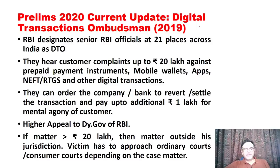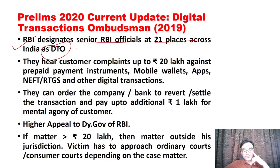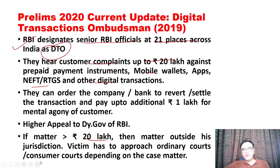Prelims 2020 current affair: in 2019, RBI designated senior RBI officials at 21 places as Digital Transaction Ombudsmen (DTOs) — it is not a new body, just officials designated. They hear customer complaints up to rupees 20 lakh against prepaid instruments like mobile wallets, NEFT, RTGS, and any kind of digital transactions. For matters more than 20 lakh rupees, the victim must approach ordinary courts, as it is outside the jurisdiction of DTOs.